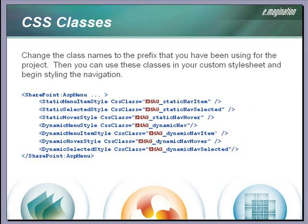To apply classes from your custom CSS, change the class names in the master page code to reflect your project code prefix. In the example shown here, the code is "emag underscore". This would correspond to matching class names in the custom CSS file.